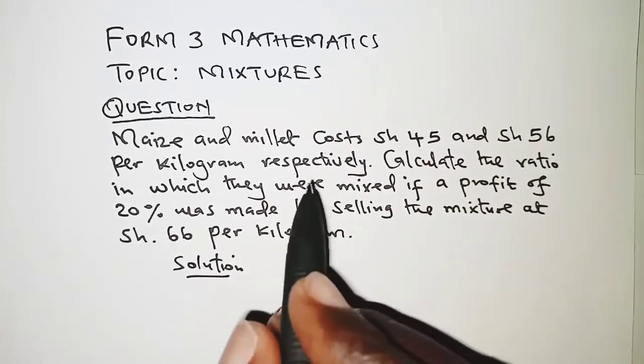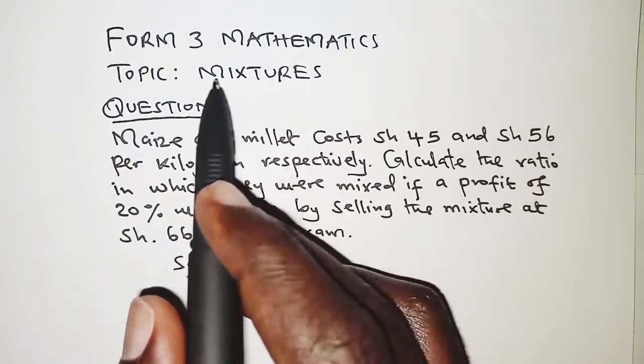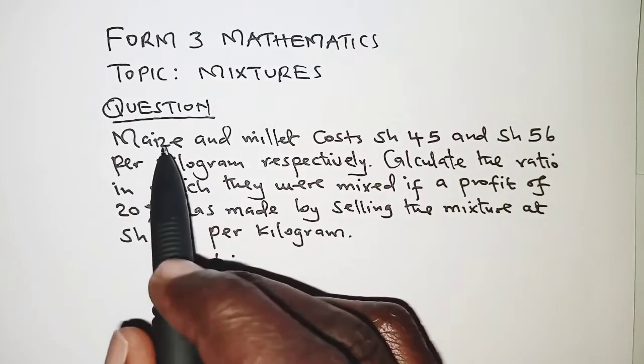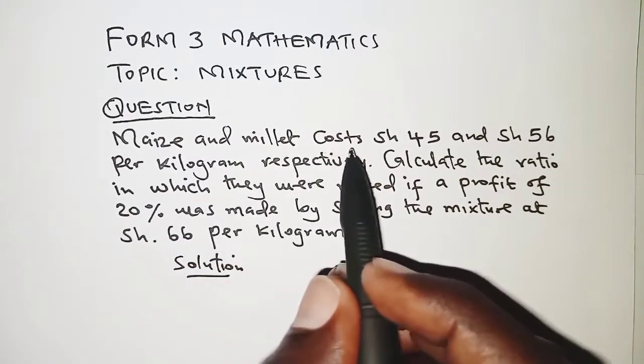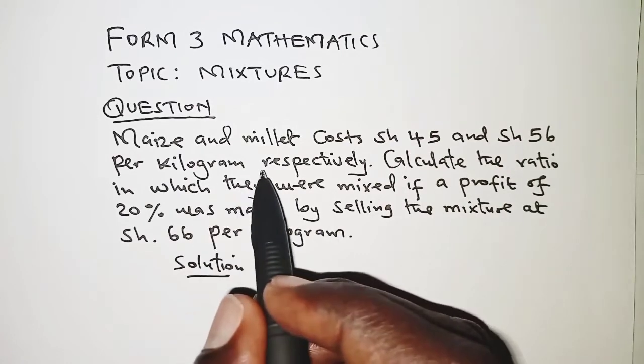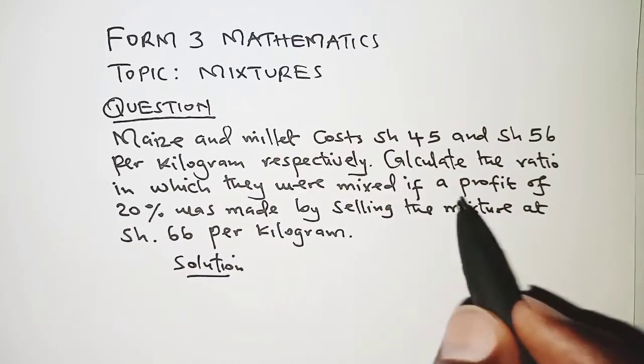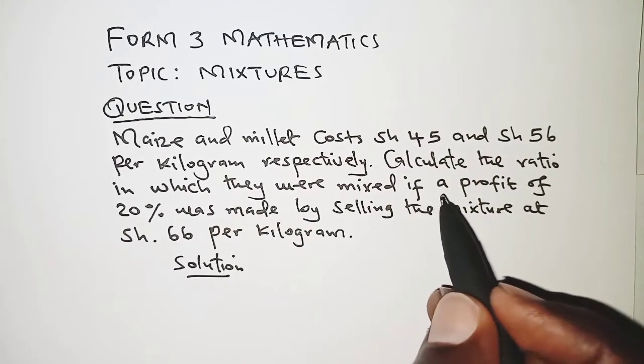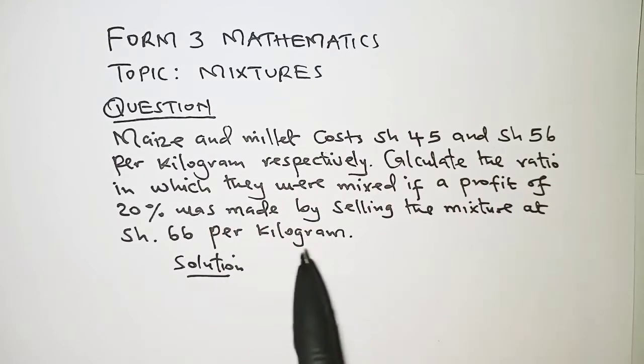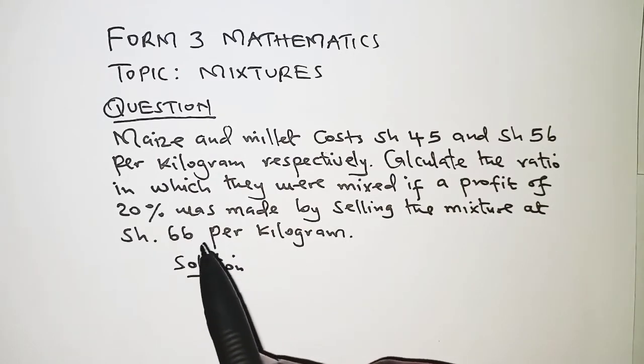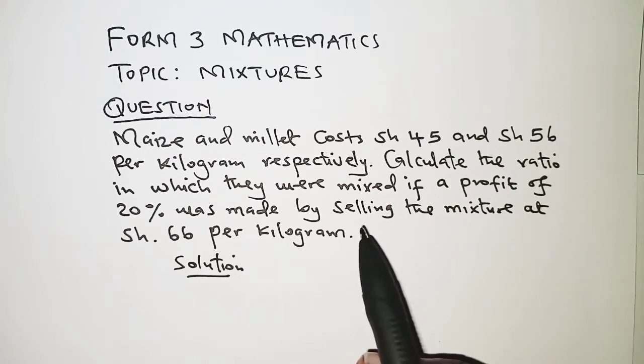Welcome, this is Form 3 Mathematics and the topic today is mixtures. The question reads: Maize and millet cost 45 shillings and 56 shillings per kilogram respectively. Calculate the ratio in which they were mixed if a profit of 20% was made by selling the mixture at 66 shillings per kilogram.